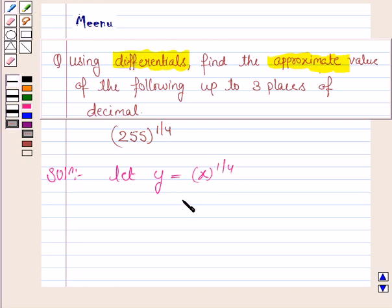And here we choose x in such a way so that we can easily find out its fourth root. And since we know 4 to the power 4 is 256, so we take it to be 256.